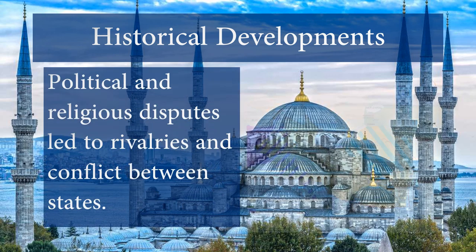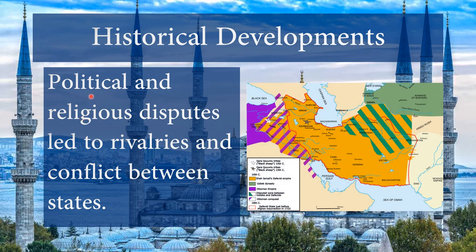Another historical development: political and religious disputes lead to rivalries and conflicts between states. The best example is between the Shia gunpowder empire of the Safavid and the Sunni gunpowder empire of the Ottomans, with border region conflicts also between the Safavids and the Mughals. The Safavids were very much Shia, while the rest of the Muslim world was predominantly Sunni. We also see religious disputes echoed in the Thirty Years' War in Europe, between Protestants and Catholics.